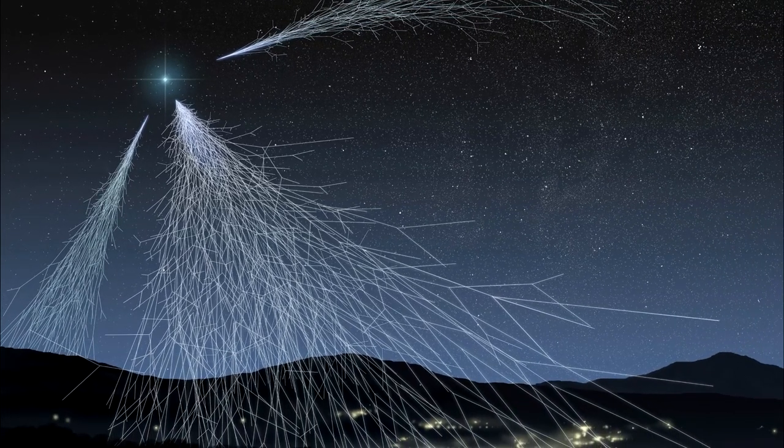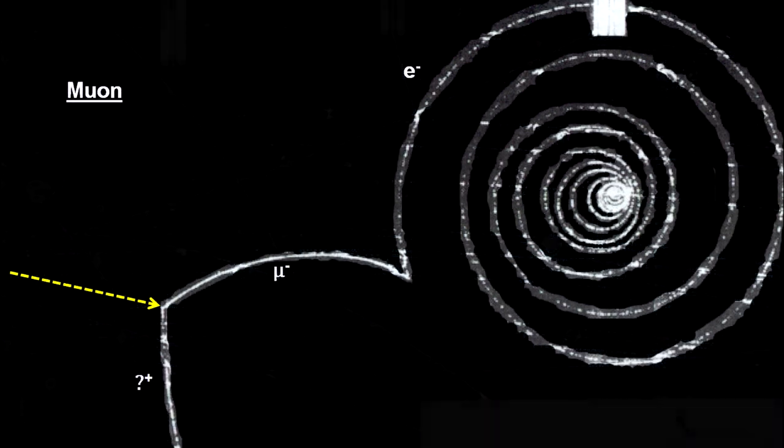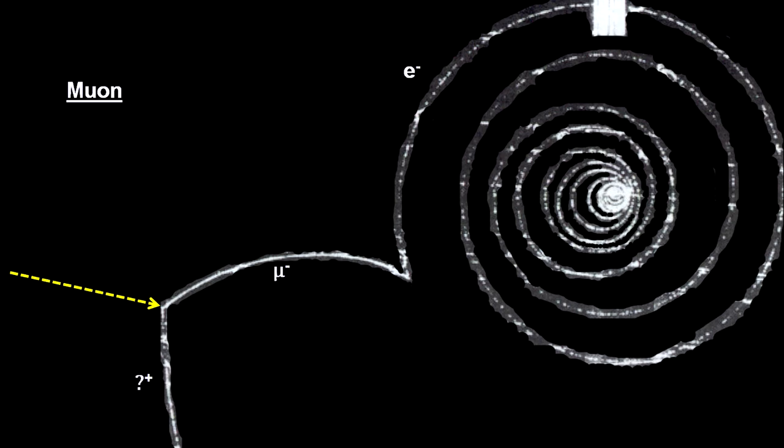You'll recall from our segment on elementary particles in the How Small Is It video book, that we discovered muons with cloud chambers on mountaintops and in high-flying balloons. We found that their half-life is only 2.2 microseconds.